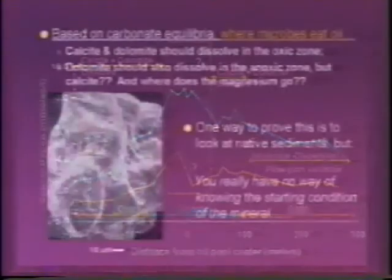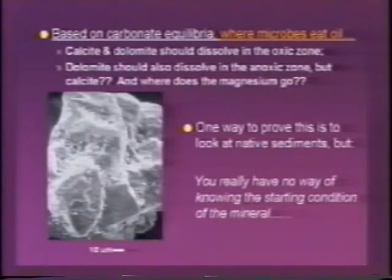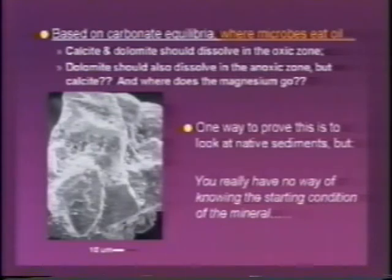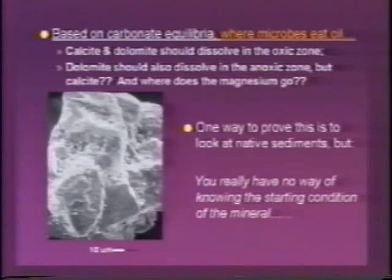One way to figure out what's going on is instead of just looking at the chemistry, look at the rocks. Scoop up some of that sediment and look at it under a scanning electron microscope and see if we can tell whether it's dissolving or what it's doing. We've done that — we've collected some of that material and looked at it under the SEM, and this is one example of a micrograph. The bar scale here at the bottom is 10 microns.